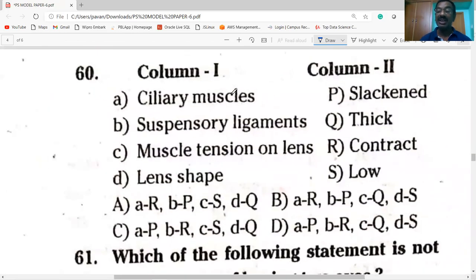Ciliary muscles contract or expand. They can control the suspensory ligaments. Tension on lens is reduced. The lens shape becomes thicker. Option A is correct.